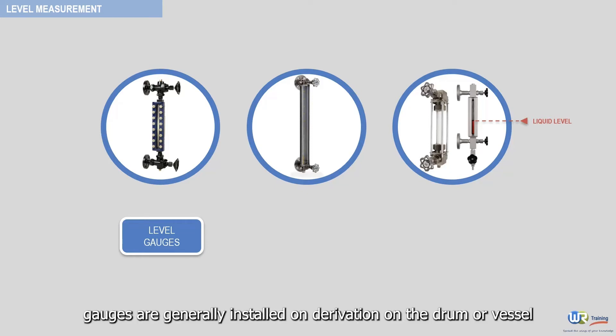Glass level gauges are generally installed on derivation on the drum or vessel to be filled, according to the principle of communicating vases. Examples of visual level gauges are depicted here.